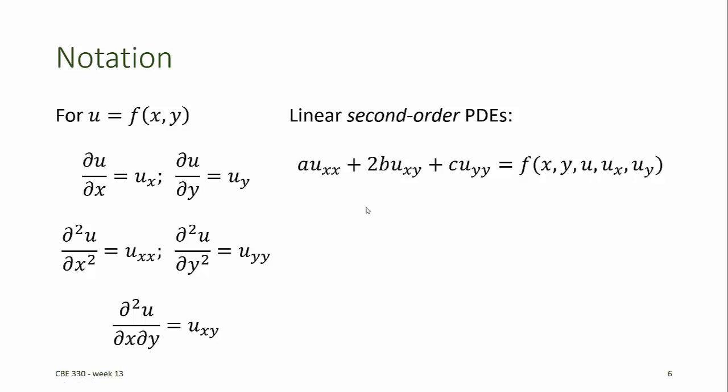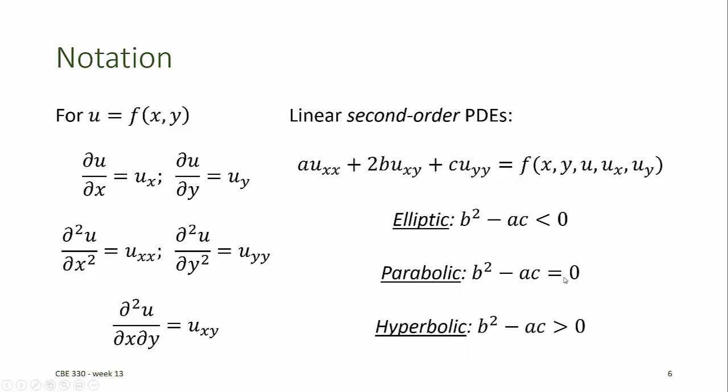Then we can classify the PDE according to whether it is elliptic, parabolic, or hyperbolic. For elliptic PDEs, b² - ac is less than zero. For parabolic PDEs, b² - ac is equal to zero. And for hyperbolic PDEs, b² - ac is greater than zero. Classifying the PDE according to this taxonomy helps us to choose the solution method that we will use to numerically solve the PDE.